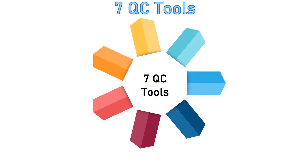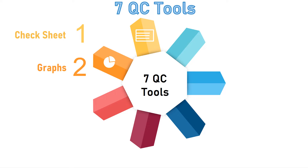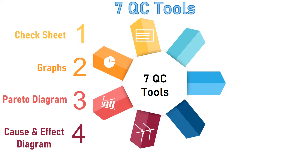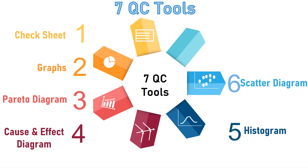What are all 7 QC tools? Let us see one by one. First, check sheet. Second, graph. Third, Pareto diagram. Fourth, cause and effect diagram. Fifth, histogram. Sixth, scatter diagram. And seventh, control chart.